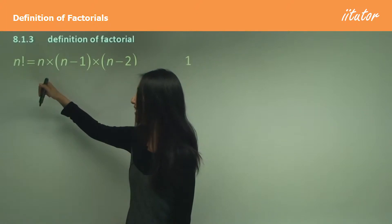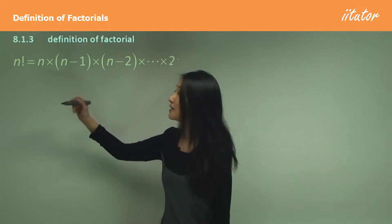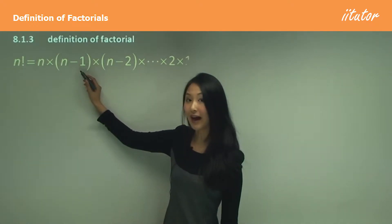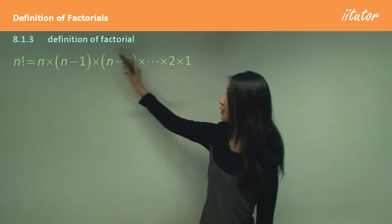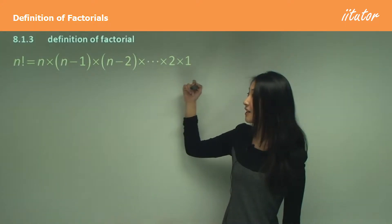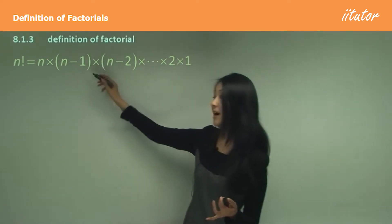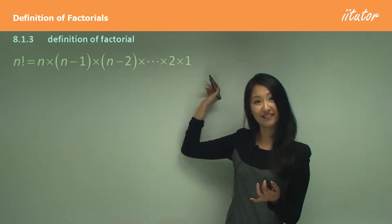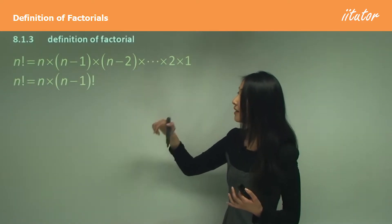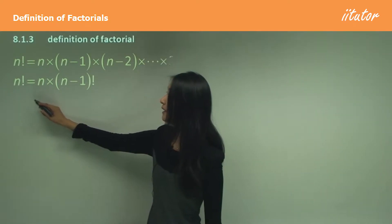Factorial uses the exclamation mark — you've probably seen that on your calculator and wondered what it does. n factorial means that number multiplied by one number less than that, multiplied by two numbers less than that, and so on until one. For example, 10 factorial would be 10 times 9 times 8, and so on until one.